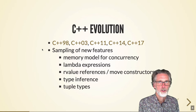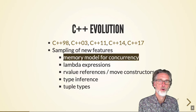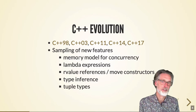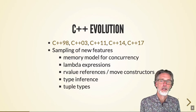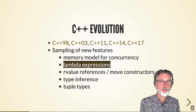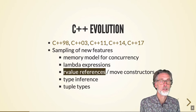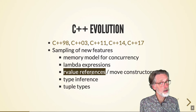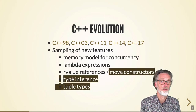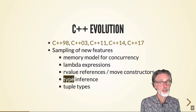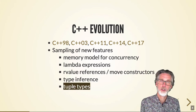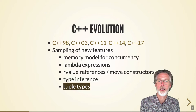These new features include a memory model for concurrency — this is my personal area of research, not totally relevant for this class — but you can also see lambda expressions, which we've studied, R-values as references and the ability to move those around. C++ has also added type inference and tuple types, as in Scala.